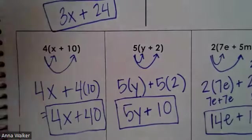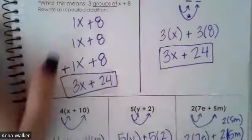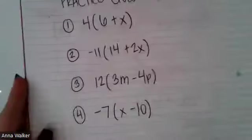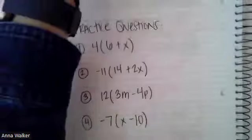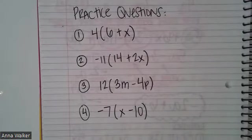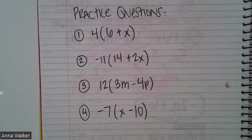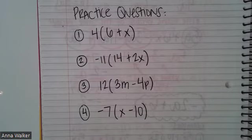Okay, if you're feeling pretty good, you do not need to rewatch the video. Let me show you what your practice questions are. So go ahead and take a moment to pause on the practice questions. You have 4 times the group 6 plus x, negative 11 times the group 14 plus 2x. You have 12 times 3m minus 4p, and then negative 7x minus 10.